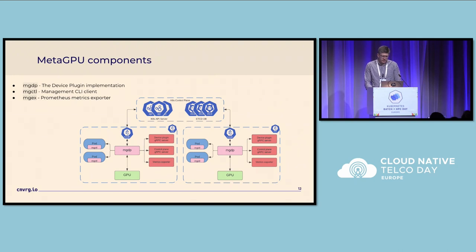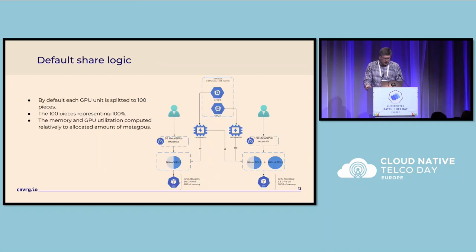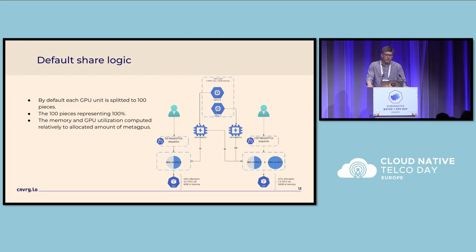In terms of Meta GPU architecture, we have a DaemonSet running on each Kubernetes node, the mgctl binary for management, and a Prometheus exporter for metrics. The share logic by default splits each GPU unit into 100 pieces, where each piece represents 1% of memory and GPU compute relative to the allocated amount. So one GPU card gives 100 Meta GPUs; two cards give 200.